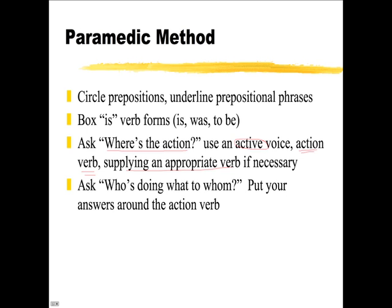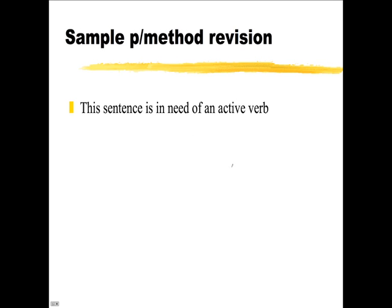You may have to supply a verb if necessary. Then, who's doing what to whom? And you put your answers around the verb. For example, here's a sentence — circle the preposition and underline the phrase, circle this preposition and underline the phrase, box 'is.' This takes some of the junk out of the sentence and leaves us with the key words: 'sentence,' 'need,' and the verb.